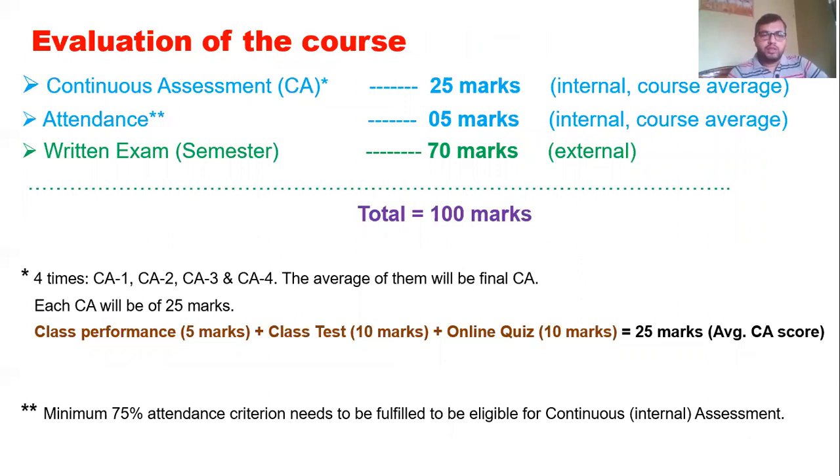Lastly, I will tell that this is the evaluation of the course. There will be a continuous assessment as per the prescribed of MAKAUT University. 25 marks is allotted from them. For attendance, 5 marks. So, 30 marks is internal. And for the return, the students have to appear for the semester exam, 70 marks external. So, total is 100 marks.